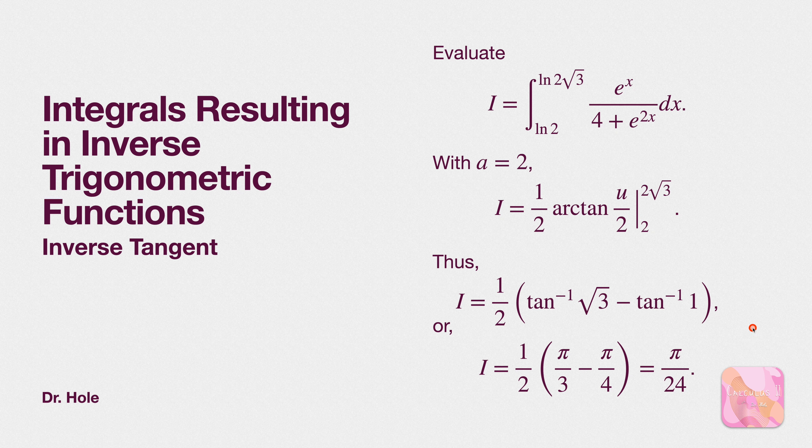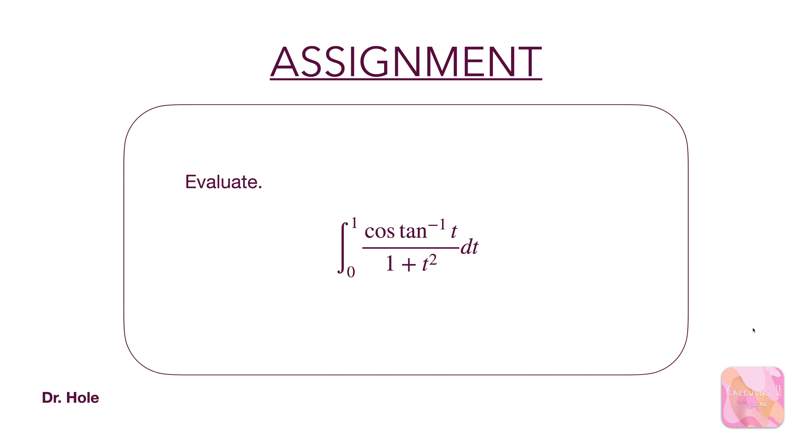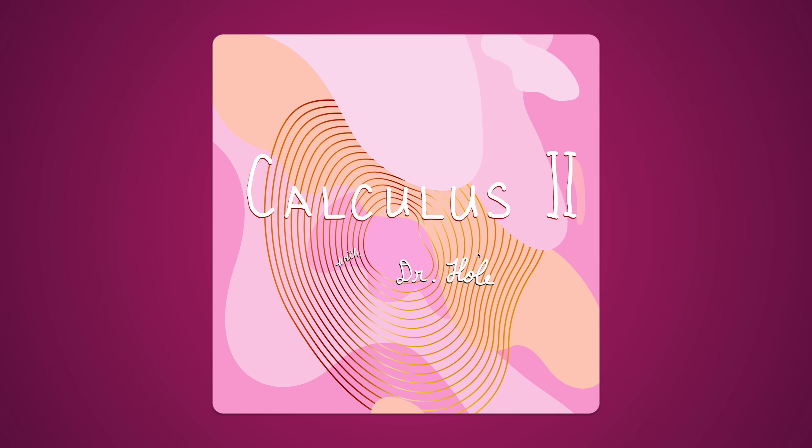And then arctan of rad 3 is pi over 3 and arctan of 1 is pi over 4. Combining those two values multiplying by half gives us our answer of pi over 24. Here's one for you. Definite integral cosine of arctan of t, composition in the top all over 1 plus t squared integral with respect to t.